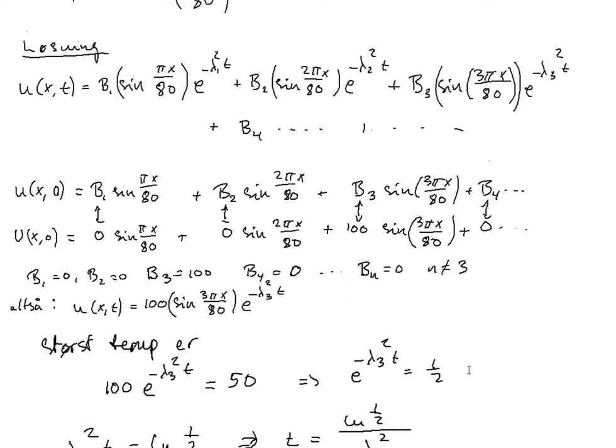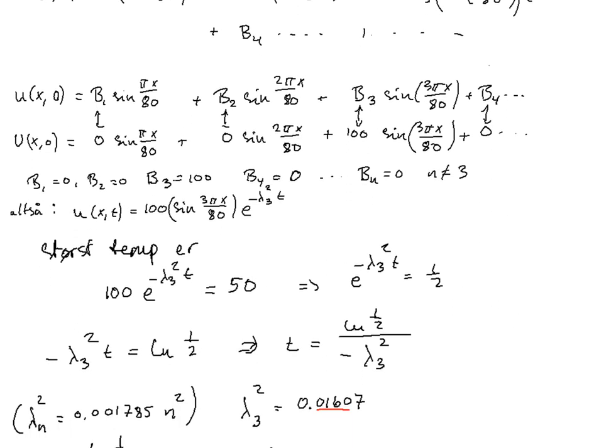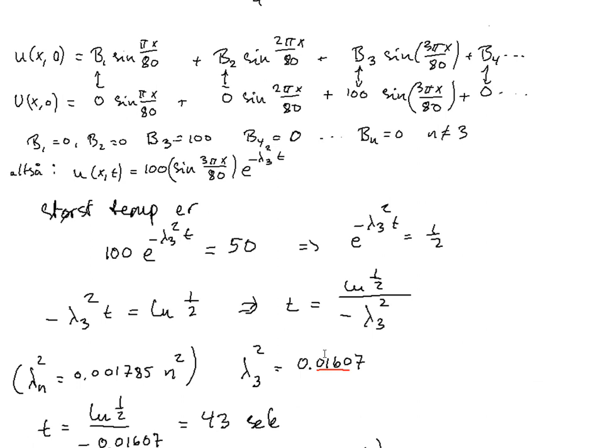And lambda 3, it's as above, it's very simple to calculate this. We knew that lambda n square is equal to 0.001785 n square. Therefore, lambda 3 square is equal to this multiplied with 3 square, and it's equal to 0.01607.